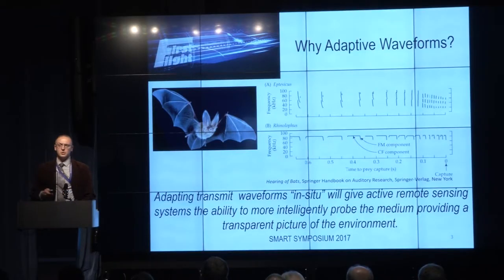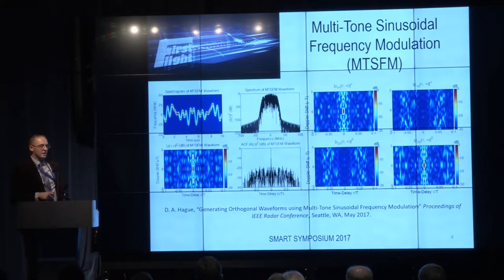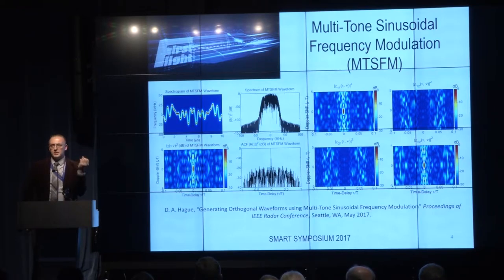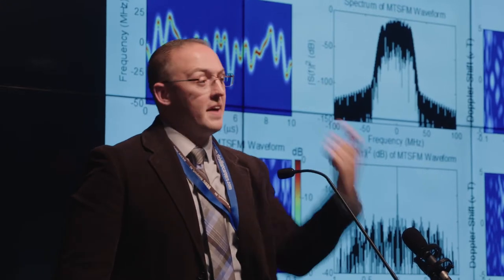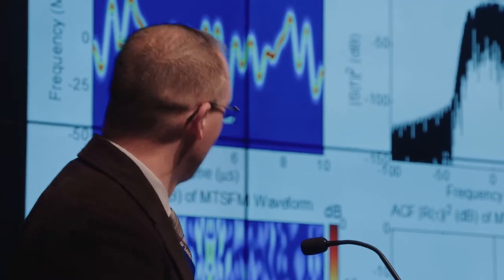I'm proposing to do this using a technique known as multi-tone sinusoidal frequency modulation. The modulation function is a weighted sum of sinusoids — shown in the upper left panel — which represents how I sweep through that band of frequencies. I can adjust those weights to generate different types of modulation functions, and that's how I adapt the transmit waveform. Because I use a finite number of sinusoids and this is a smooth modulation function, it has very high spectral efficiency, as shown in the right plot — most of the energy stays in the band I'm sweeping through, with very little elsewhere.